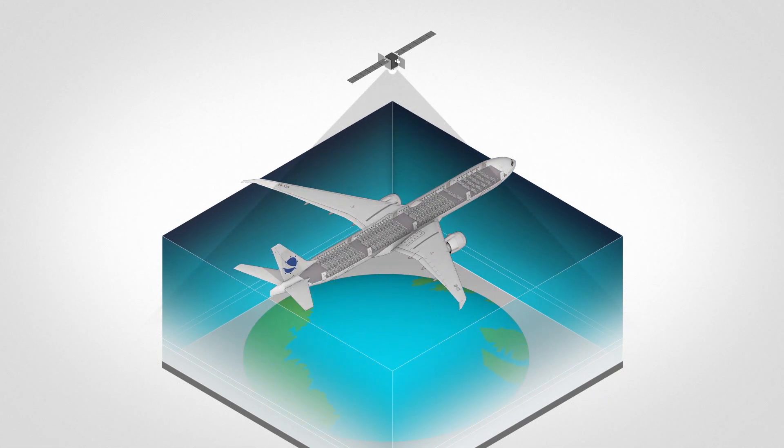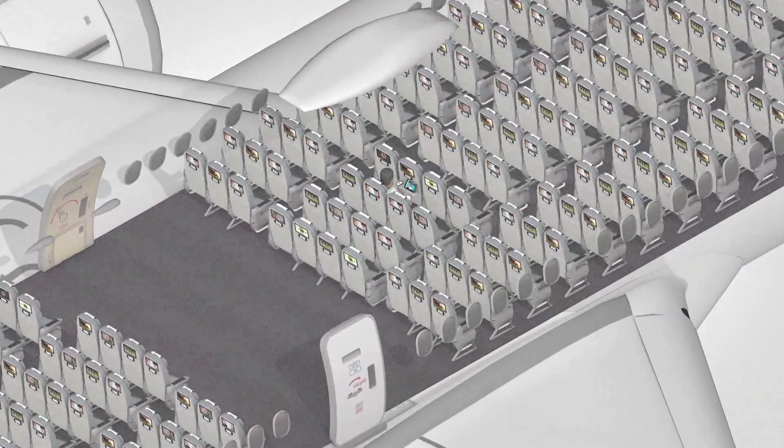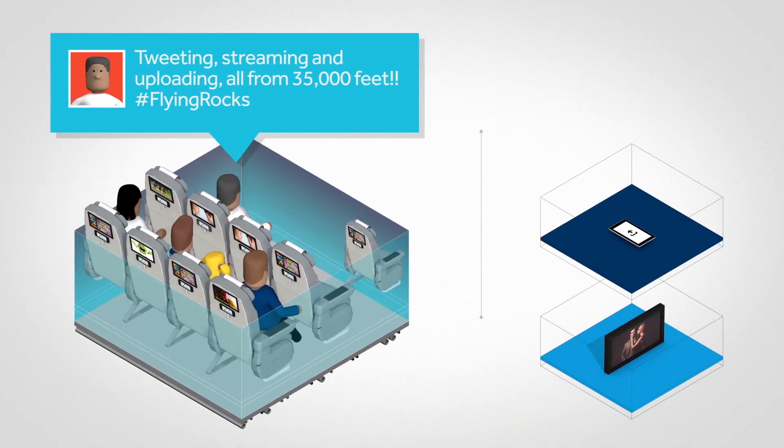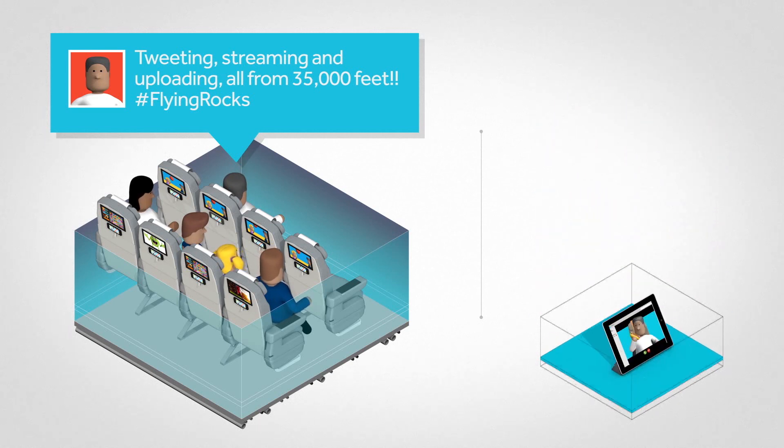Passengers can experience the same Wi-Fi connection at 30,000 feet as they would on the ground. Whilst in the air, customers are in total control of their connected experiences, able to simultaneously access content, share photos, and communicate with friends, family, or colleagues on the ground.